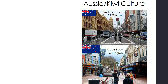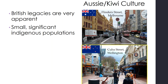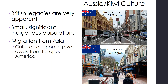Looking at culture a little more: we have Australian and New Zealand — or Aussie and Kiwi — culture. The British legacies in these countries are very apparent if you look at the flags and what their cities look like. There are pictures of Melbourne in Australia and Wellington in New Zealand. They have small but significant indigenous populations, which I'll talk about in a minute, and also lots of migration from Asia to the region. They have culturally and economically pivoted away from Europe and America, more towards Asia.